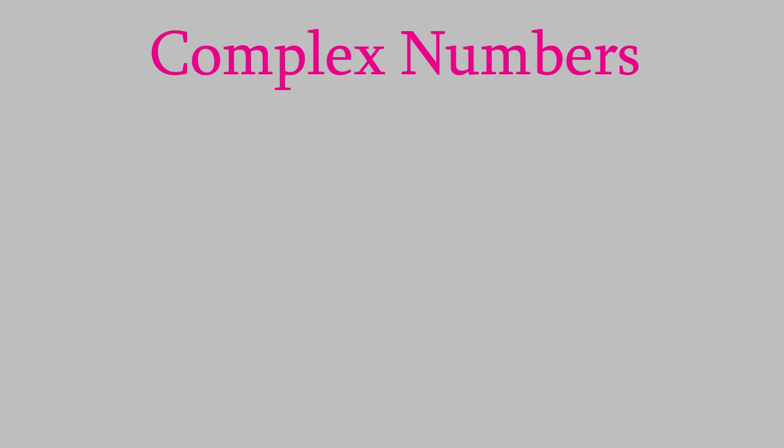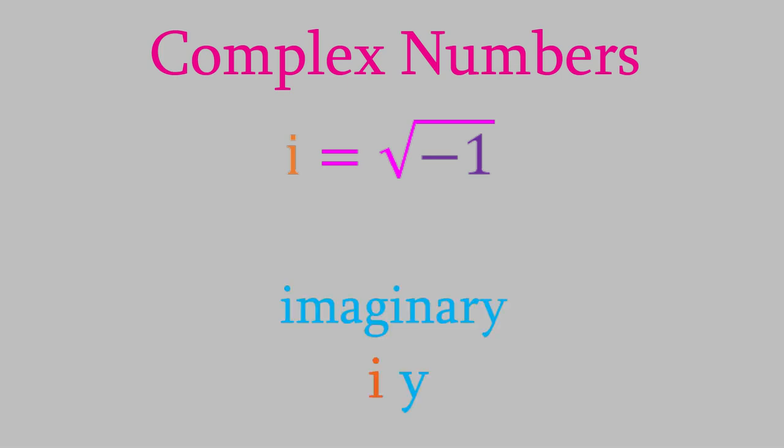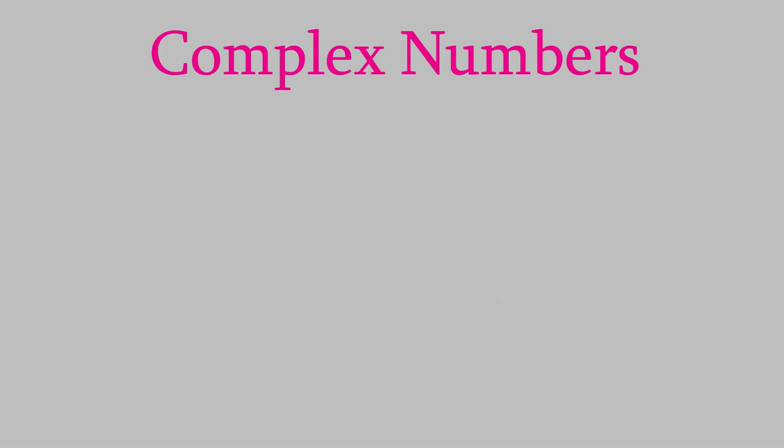You might be familiar with the number i, which is equal to the square root of negative one. A real number multiplied by i is called an imaginary number. But this is kind of deceptive — imaginary numbers aren't really imaginary at all. They're quite real, and as we'll see later in this course, they're very important in describing the waves that characterize particles like electrons. If we add or subtract a real number and an imaginary number, we get what's called a complex number.